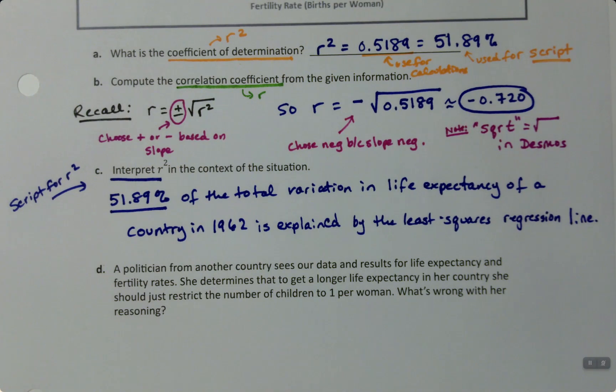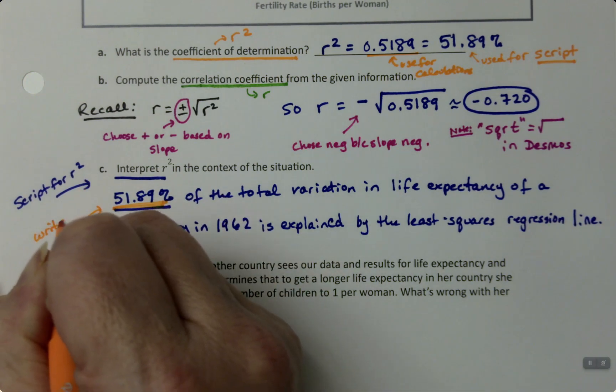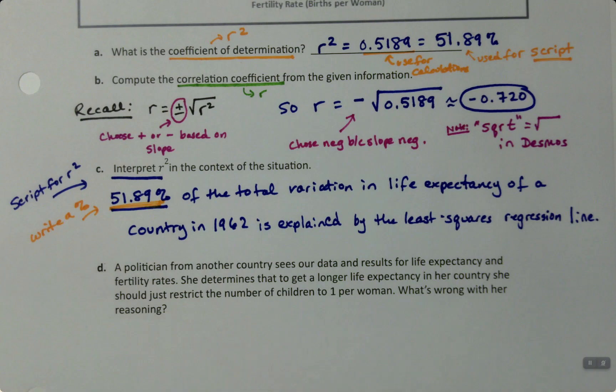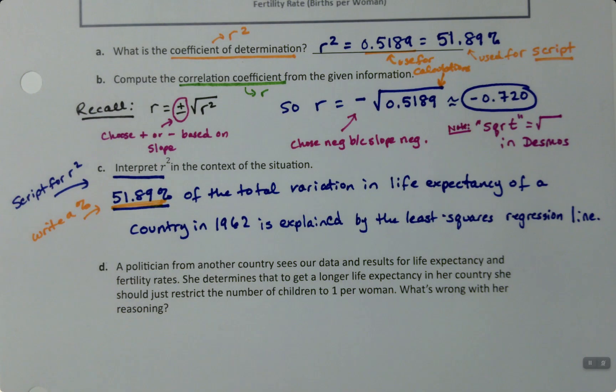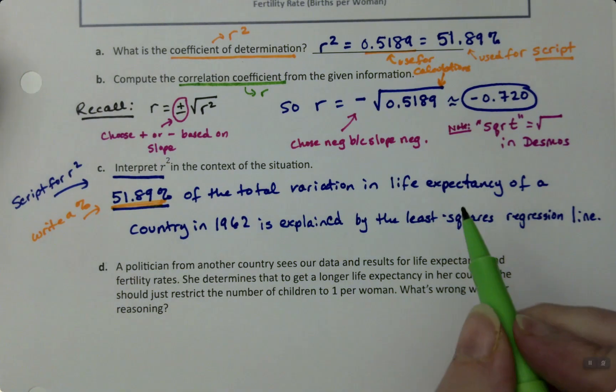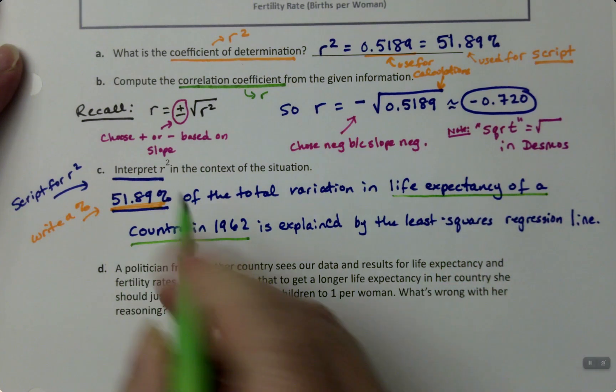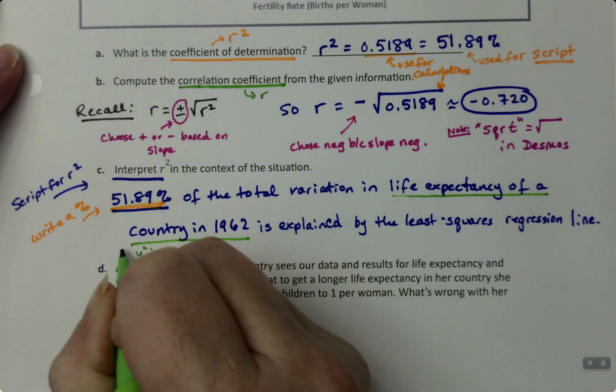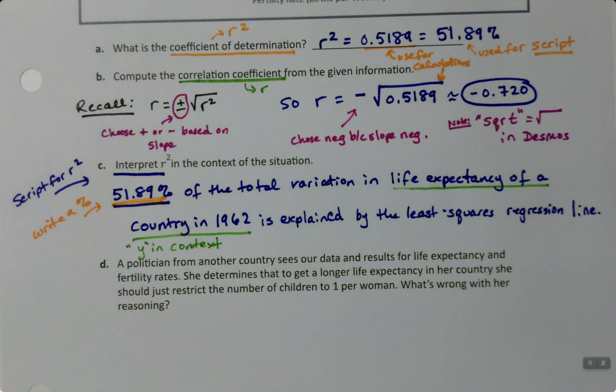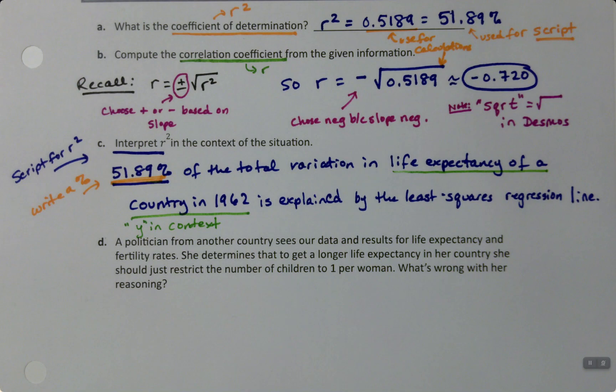Again, this is your percentage written that way, right? Write as a percent. Write a percent, write not a decimal. The decimal's used for calculations here. The script uses the percentage. Then the Y part is all of this stuff: life expectancy of a country in 1962. That is 'why' in context. And then the rest of it is literally the script. This is the one script we never stray from. We just write it as it is.